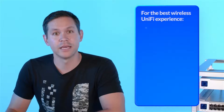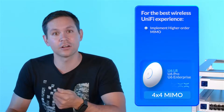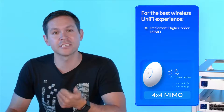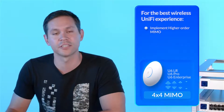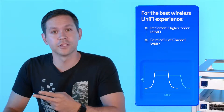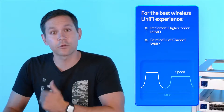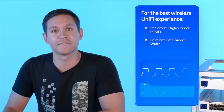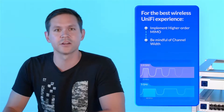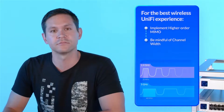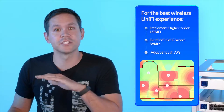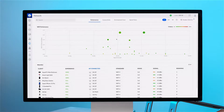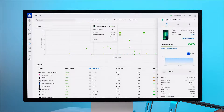To give your Unify network the best wireless experience, we recommend a few things. Implementing higher-order MIMO — our U6 LR, U6 Pro, and U6 Enterprise APs all have 4x4 MIMO configurations. Being mindful of your channel width: wider channels can maximize speed, but narrower channels provide greater stability. As such, 5 gigahertz radios in Unify APs have a default channel width of 40 megahertz, and 20 megahertz for 2.4 gigahertz radios. Finally, adopting enough APs to ensure that all of your devices have a strong signal. The Wi-Fi Insights tab in your Unify network application can quickly give you an idea of where you need to deploy more APs.